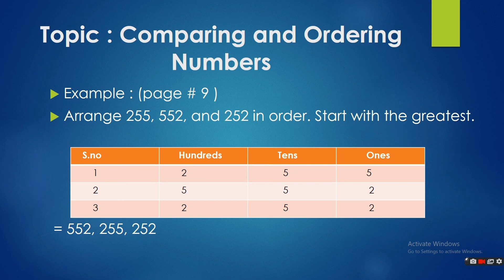In this topic, by comparing the digits in a number, we arrange them accordingly. Now, look at the example over here: arrange 255, 552, and 252 in order, starting with the greatest.